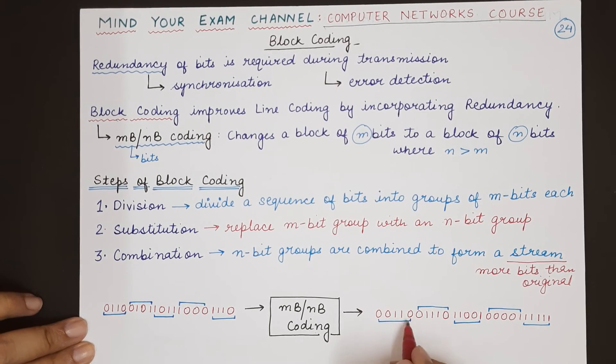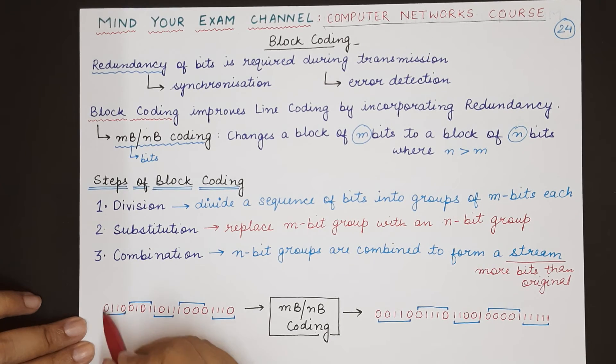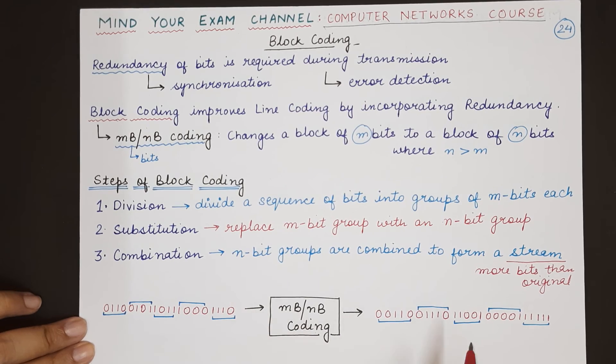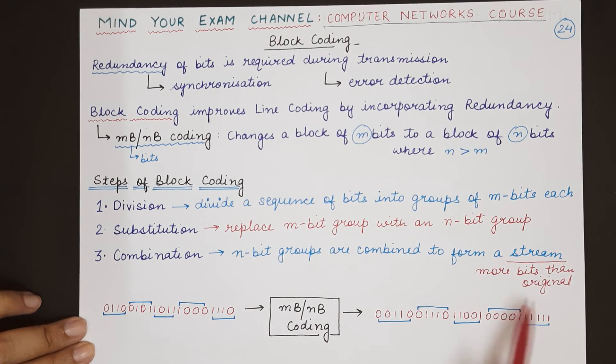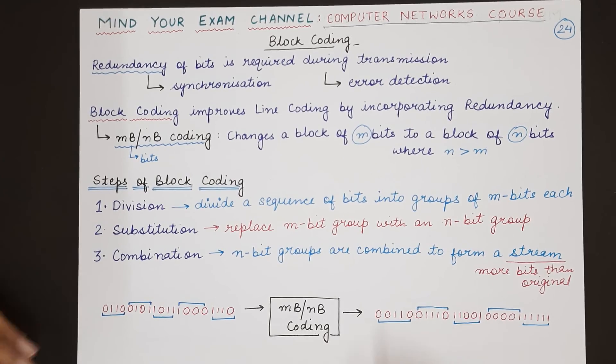The four bits have been replaced with a group of five bits each. So this is now converted or rather coded into mB/nB coding, and the resulting combined stream after combining all the n-bit groups is received by the receiver. The extra bits are used for control operations, error detection, and even synchronization, as discussed.